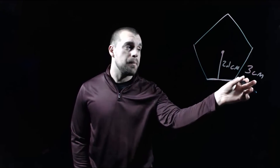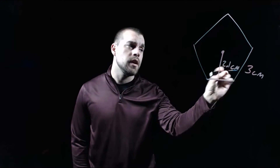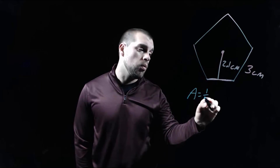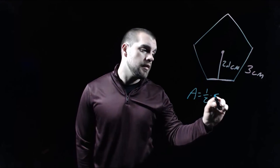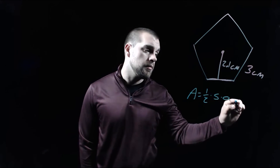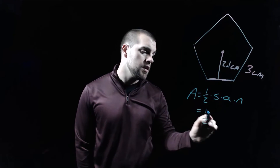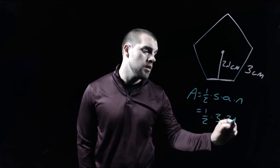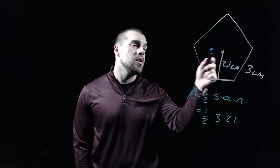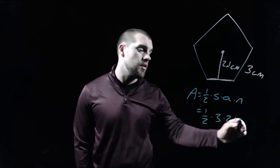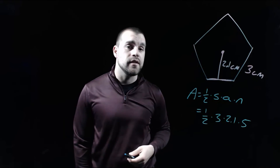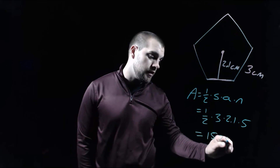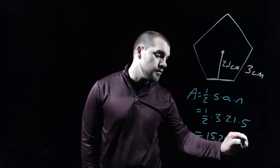In this example, we've got a pentagon with side lengths of 3 centimeters and the apothem length is 2.1 centimeters. Using the formula again, we go one half times the side length times the apothem times the number of sides. So we've got one half times 3 times 2.1 times 5, since this is a pentagon. Typing all of this into the calculator, we get about 15.75 centimeters squared.